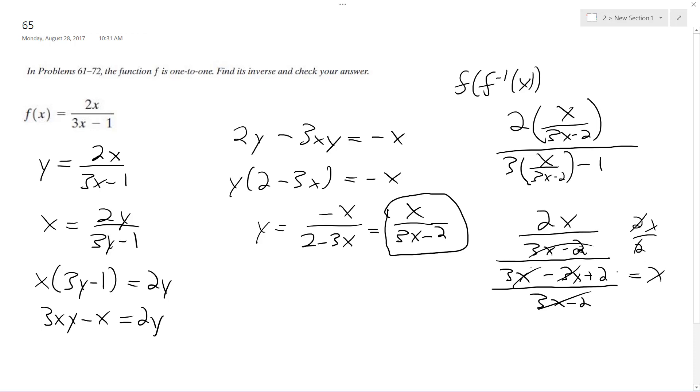So that checks that this inverse is correct. It works. All right, x over 3x minus 2 is our inverse. That's it.